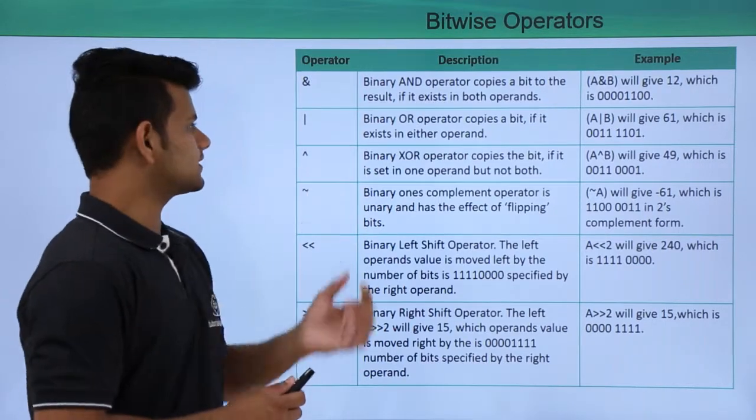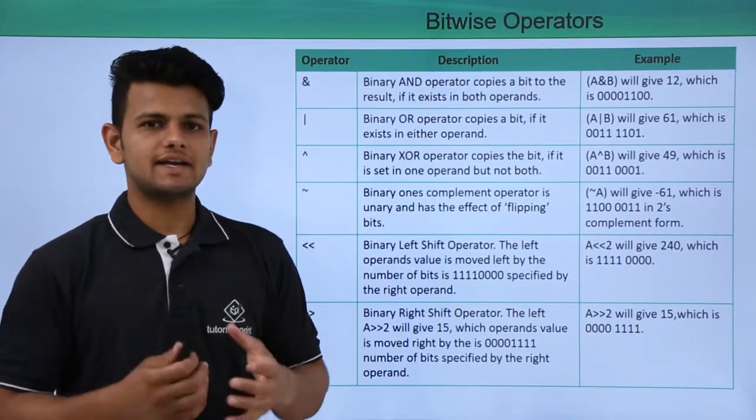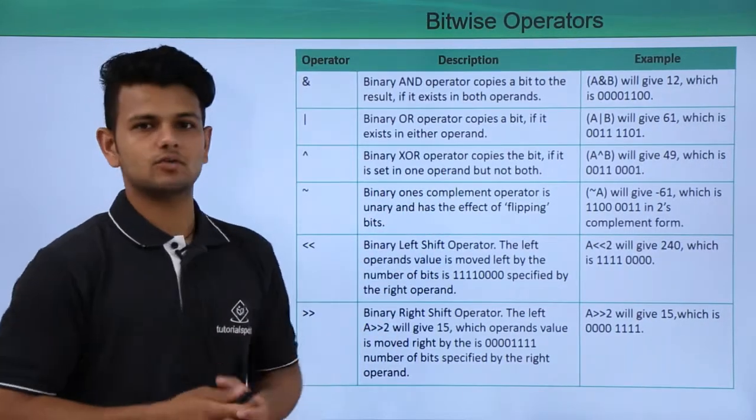The third operator is a XOR operator which copies the bit and sets it to one of the operand but not both.